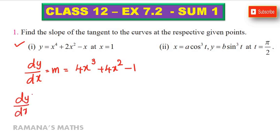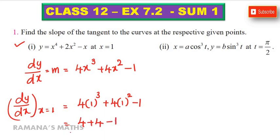dy by dx at x is equal to 1: 4 into 1 to the power of 3 plus 4 into 1 to the power of 2 minus 1. Simplifying: 4 plus 4 minus 1, 8 minus 1 is 7. This is slope m.